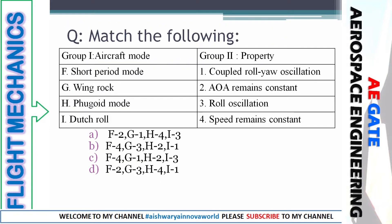Next comes a match-the-following on flight modes and their properties. In group 1 we have: short period mode, wing rock, phugoid mode, and roll. On the other side we have: coupled roll-yaw oscillation; angle of attack remains constant; and speed remains constant. We also have a set of answer options to match these.